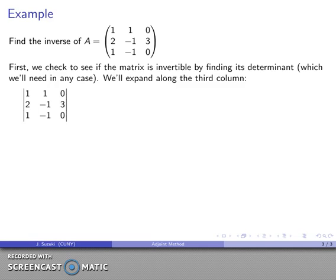Here's my matrix, and I like the third column because it has a couple of zeros in it. So when I find the determinant by expanding along that third column, two of the terms in the expansion are going to be zeroed out.